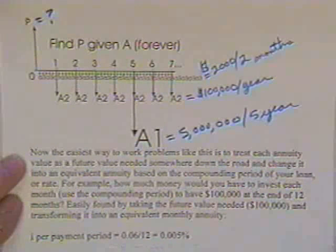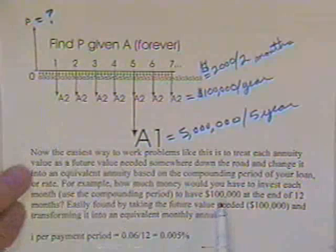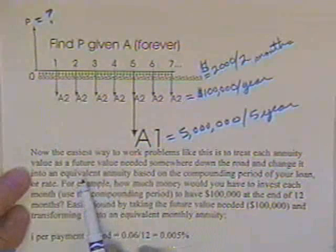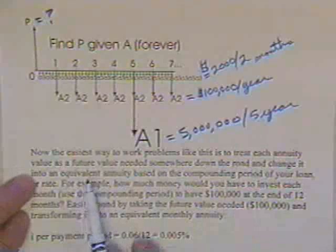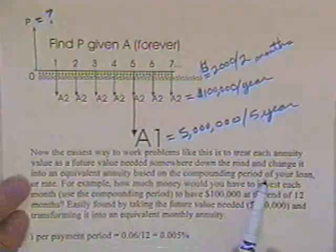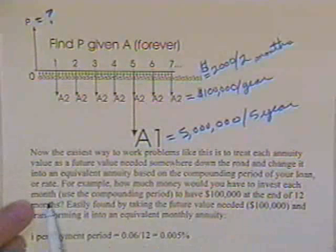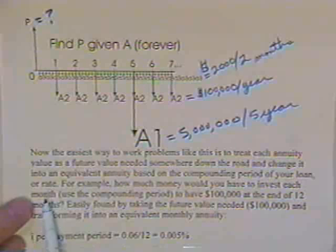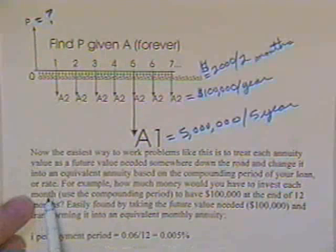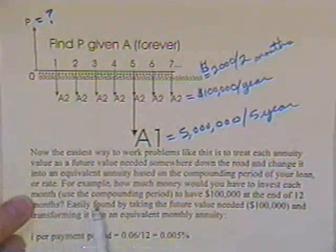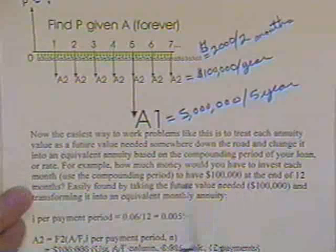Now, problems like this, the easiest way to work such a problem is just to bring all these annuities and treat them as if they are some future value that you need somewhere down the road and change it into an equivalent annuity based on the compounding period. For example, let's just do one of these. How much money would you have to invest each month? Because that's the compounding period. You say we're taking money out every two months. It doesn't matter. Say we're taking money out every 12 months. It doesn't matter. Taking that money every five years. I don't care. The bank pays compounded monthly. Therefore, that's the period, the compounding period I'm going to use.